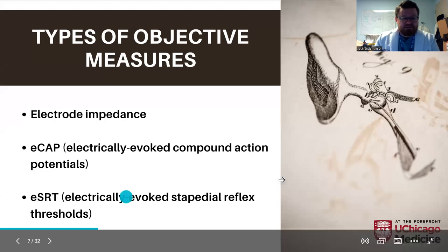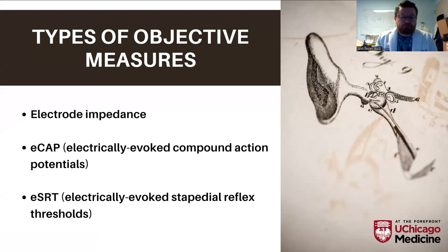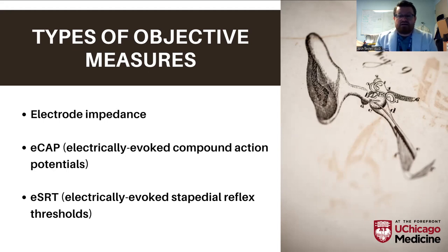There are multitudes of types — middle and late responses, EABR. A lot of those are primarily used for research purposes. EABR can be a great tool for determining neural responses, but it requires extra equipment and is more tedious. The three I want to focus on for this discussion are electrode impedances, ECAPs — electrically evoked compound action potentials — and ESRTs — electrically evoked stapedial reflex thresholds. These are very easily accessible in the clinic, don't take long, and only one requires extra equipment.